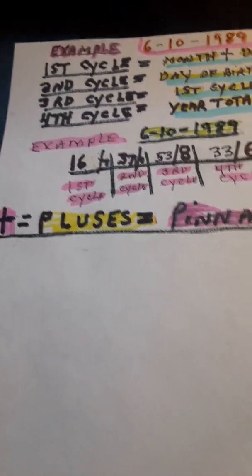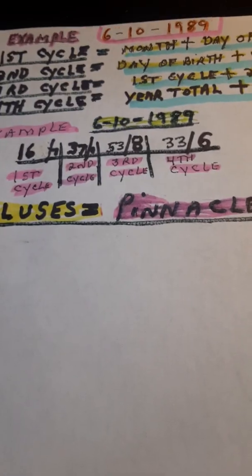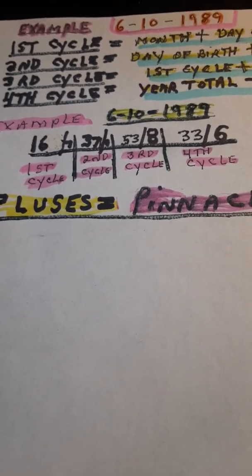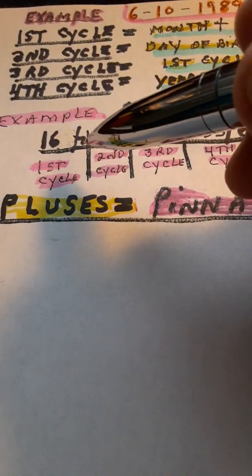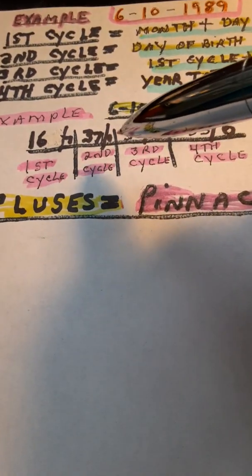So this would show you how to ascertain. And then later on I'm going to show you what the challenges are. These are what they call the pinnacles. These are the pluses that we have in our life. These are the dividing points. The dividing points between one cycle and another, you'll see a major event occurring in a person's life.